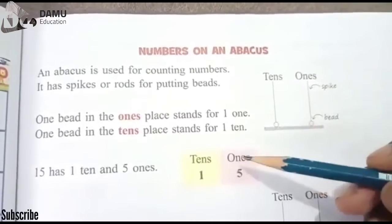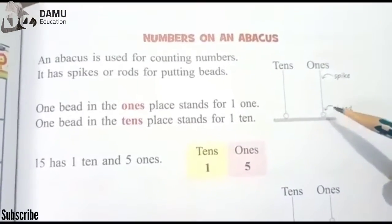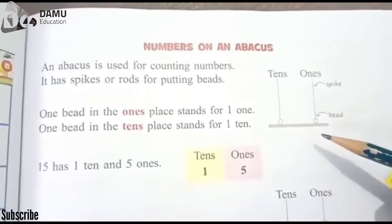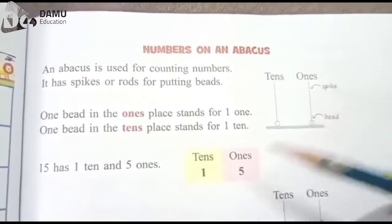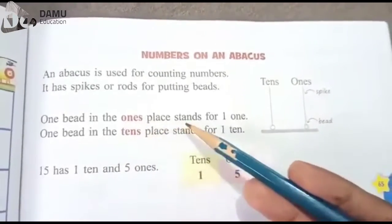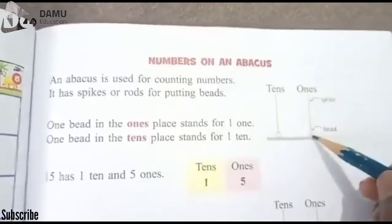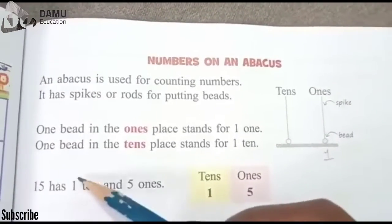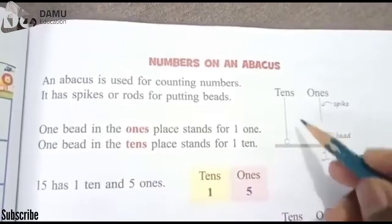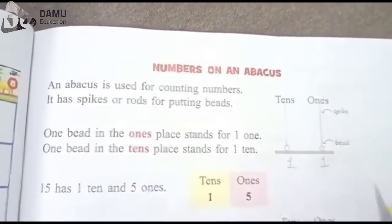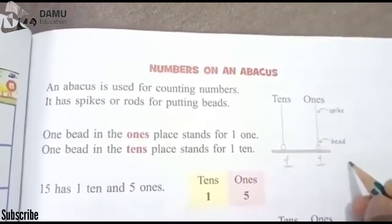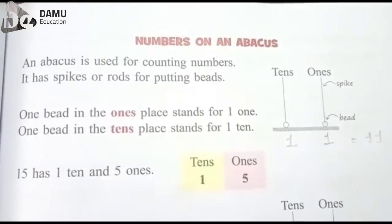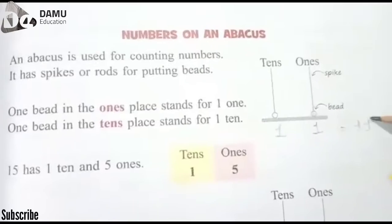One bead in the ones place stands for one. One bead in the tens place stands for one ten. We divide the number into two parts — ones place and tens place. One bead in ones place, one bead in tens place — combined, that gives us 11.